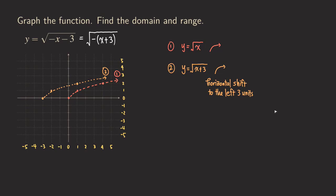Now we need to think about the axis of reflection, because the next step is to apply a horizontal reflection. Initially, reflecting the parent function would reflect about the y-axis. But because we already did the shifting, when we apply the reflection we need to reflect about this line. Initially the line of reflection is at x equals 0, but now it's going to be at x equals negative 3.